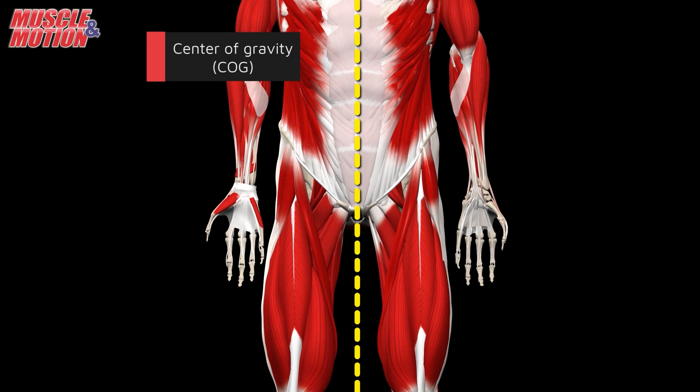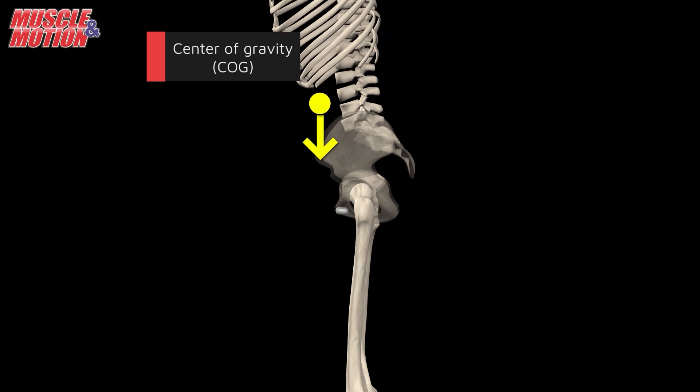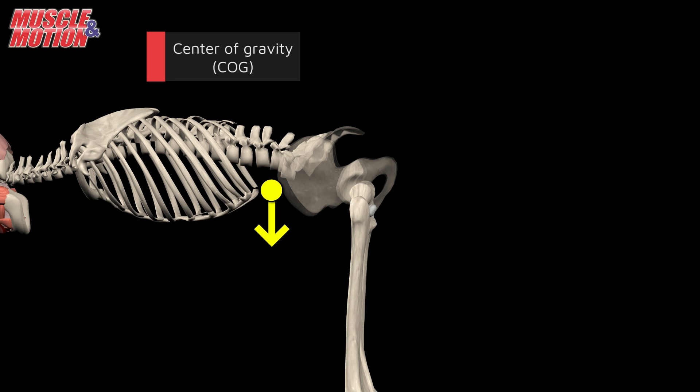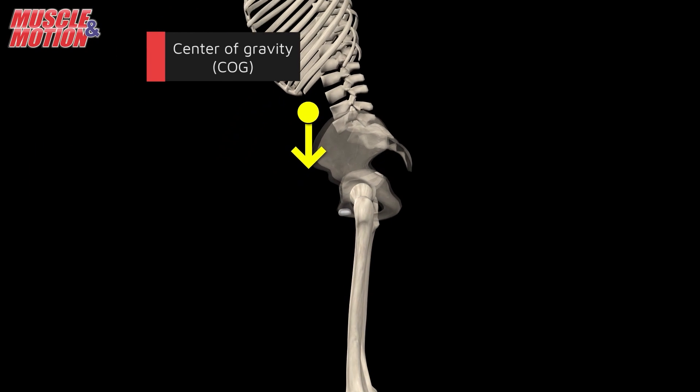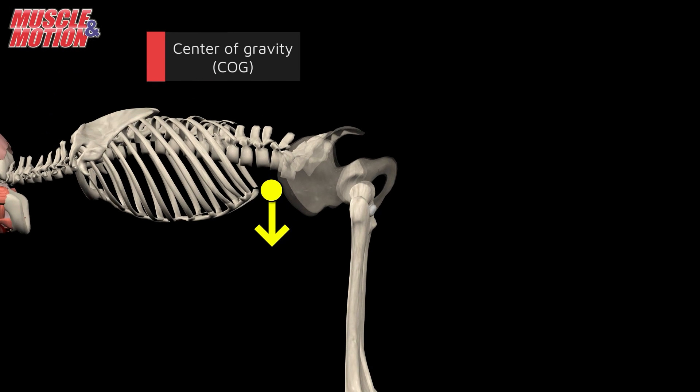The center of gravity varies from person to person, but on average when standing upright, it is located in the body midline in front of the lumbar vertebrae L1-L3. However, this point can shift depending on an individual's body shape, posture, and position. For instance, when you bend forward or backward, your center of gravity moves accordingly.